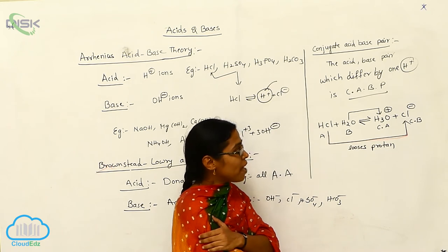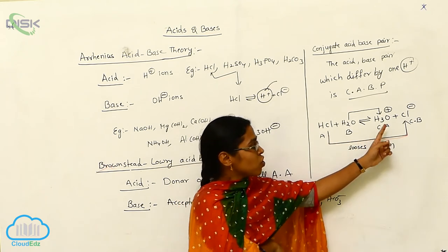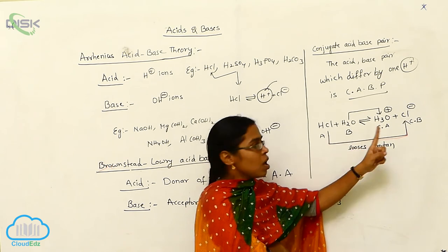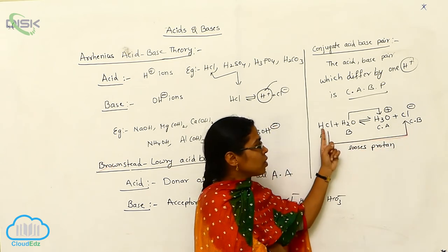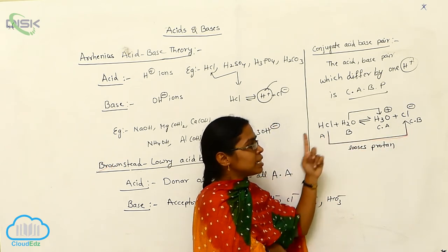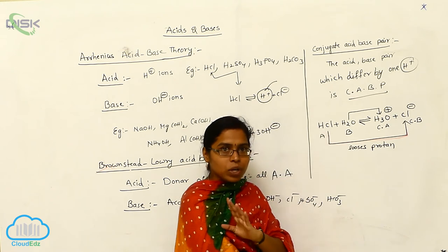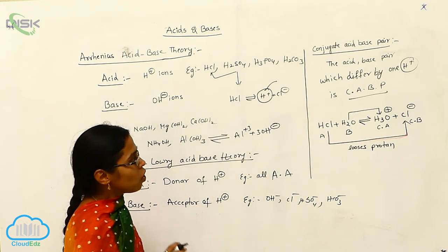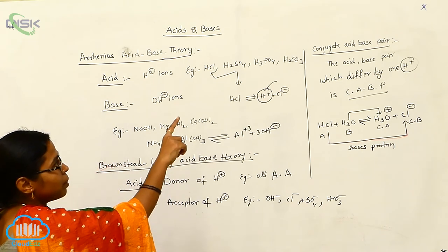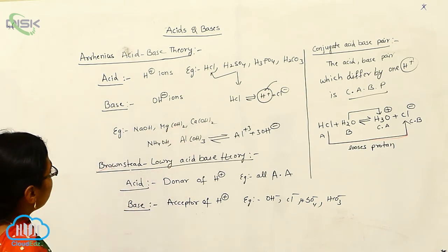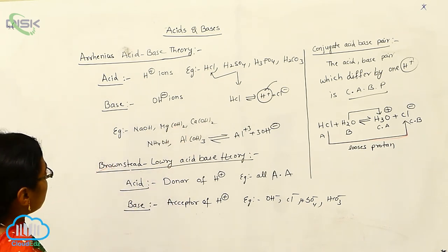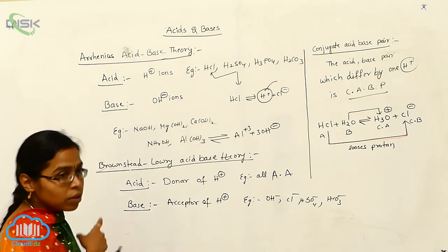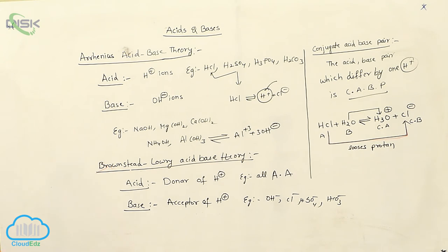So to summarize: conjugate acid always comes from the Bronsted base, and conjugate base always comes from the Bronsted acid. Don't confuse these. These terminologies are used in the Bronsted-Lowry acid-base theory, also called the conjugate acid-base theory. I will now explain with application-based examples using four examples.